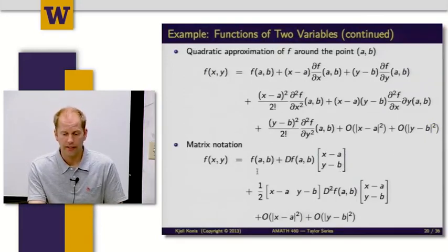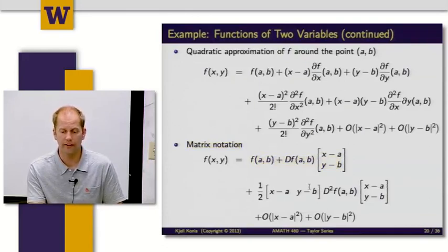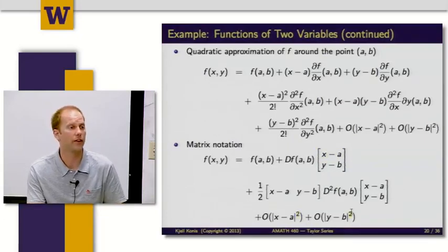And I can write all of this in matrix-vector notation, which simplifies things quite a bit. I have f of a, b as the constant term, then the linear term, then the quadratic term written as one half times the vector transposed times the Hessian times the vector, and then the remaining error terms are to the third power — the cubic error term.